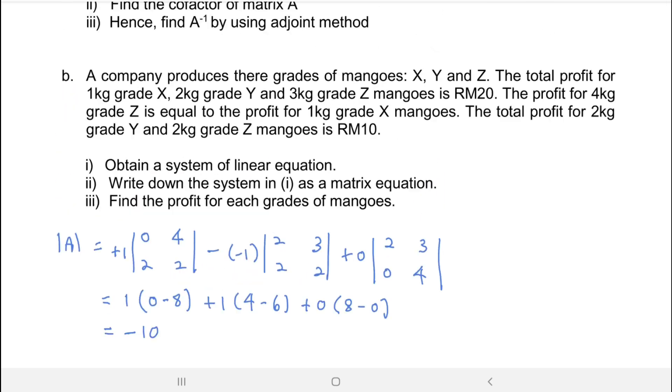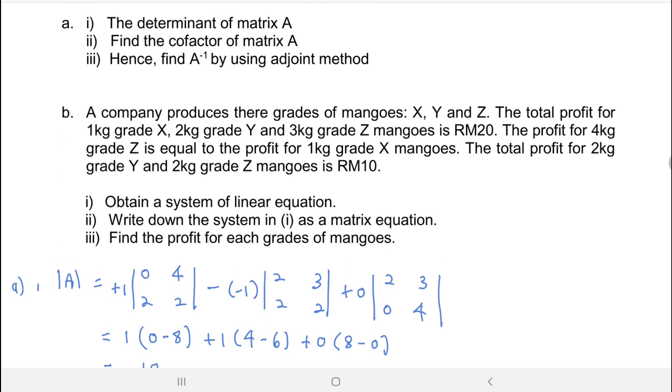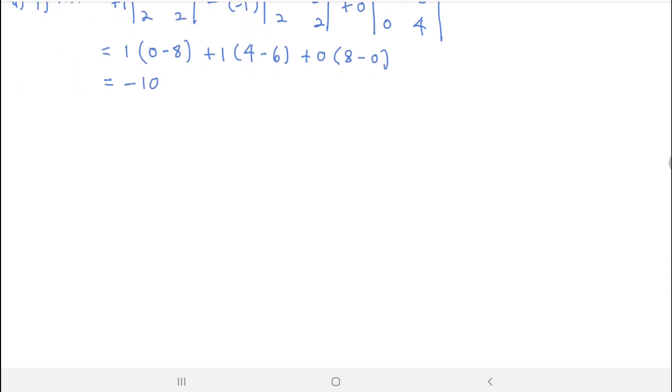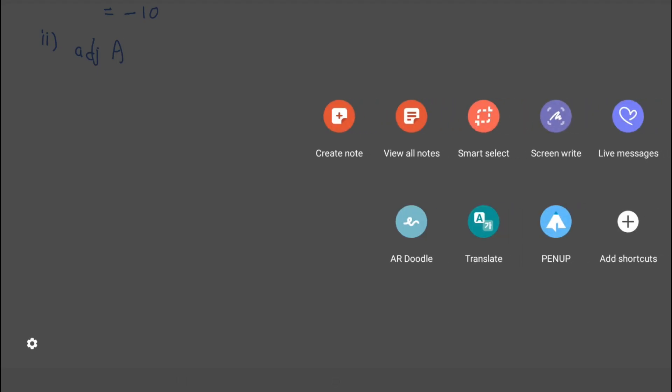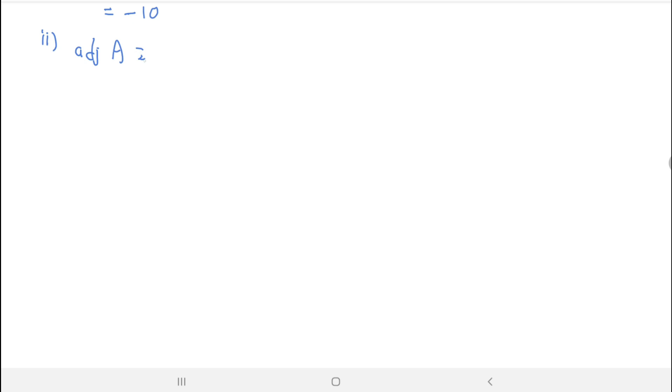Then the question asks for the cofactor of matrix A. The cofactor of matrix A is: plus 0, 4, 2, 2; negative 1, 0, 4, 2, 2; negative 1, 4, 0, 2; plus negative 1, 0, 0, 2.